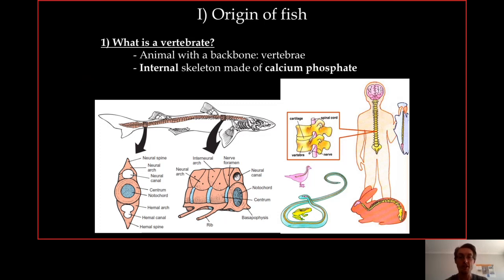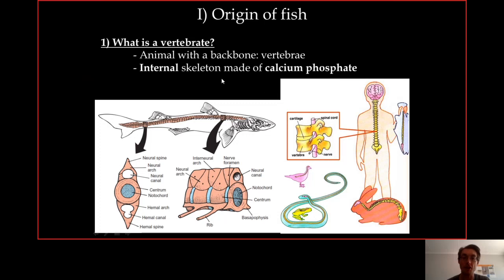Let's start with the origin of fish and vertebrates. What is a vertebrate? Vertebrates are animals with a backbone made of a series of bones called vertebrae, which leave passage to the spinal cord. As opposed to invertebrates, vertebrates have an internal skeleton made of calcium phosphate — also called apatite — instead of calcium carbonate like invertebrates, which have an external shell.